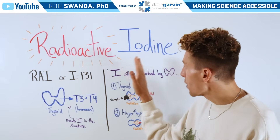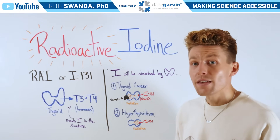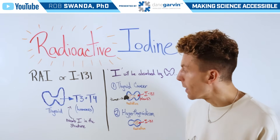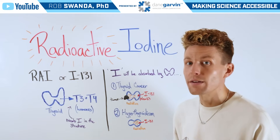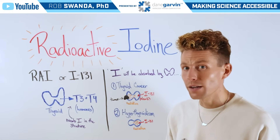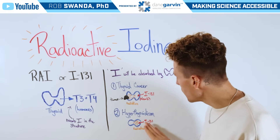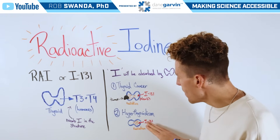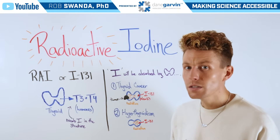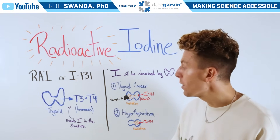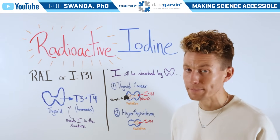Additionally, radioactive iodine can be used for hyperthyroidism, which is when the thyroid is producing way too much T3 and T4 hormones. We need to bring those levels down by reducing the number of cells actually present in the thyroid. So again, by using radioactive iodine, it will be localized to the thyroid and absorbed, emitting radiation — this time killing healthy cells and therefore reducing the amount of T3 and T4 hormones the thyroid is making.